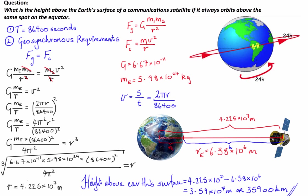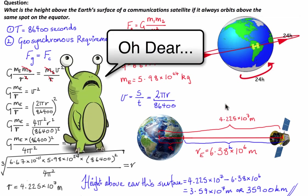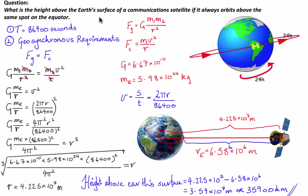These problems come up a lot in high school physics tests and exams, so it's a good idea to have a deep understanding of how it works. An important side note: one thing I forgot to mention at the start is that the mass of the satellite doesn't make any difference. If the mass of the satellite is included in the question, it's auxiliary information and can be discarded — unless you're calculating the actual gravitational or centripetal force. If you're just finding height above Earth's surface, the satellite's mass is not important at all.